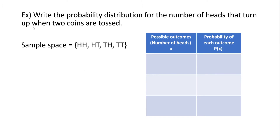Let's say we wanted to write the probability distribution for the number of heads that turn up when two coins are tossed. The sample space for the experiment of tossing two coins is over here. We could end up with two heads, one head and one tail, one tail and one head, or two tails. The possible outcomes we're considering — how many heads could come up — are zero, one, or two.